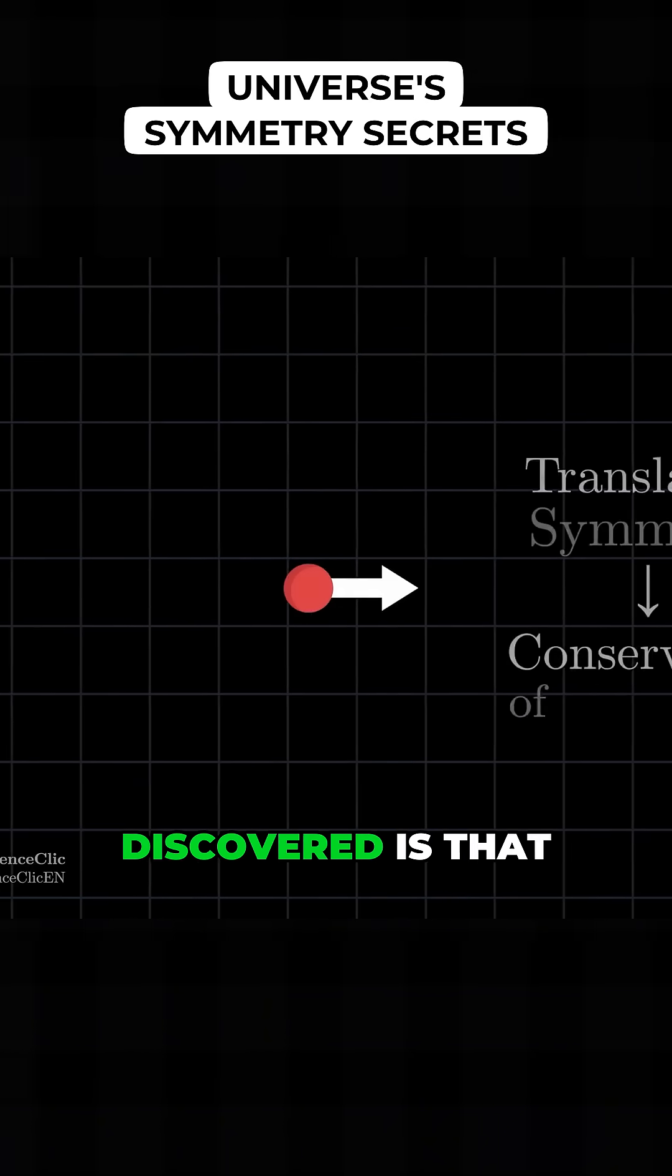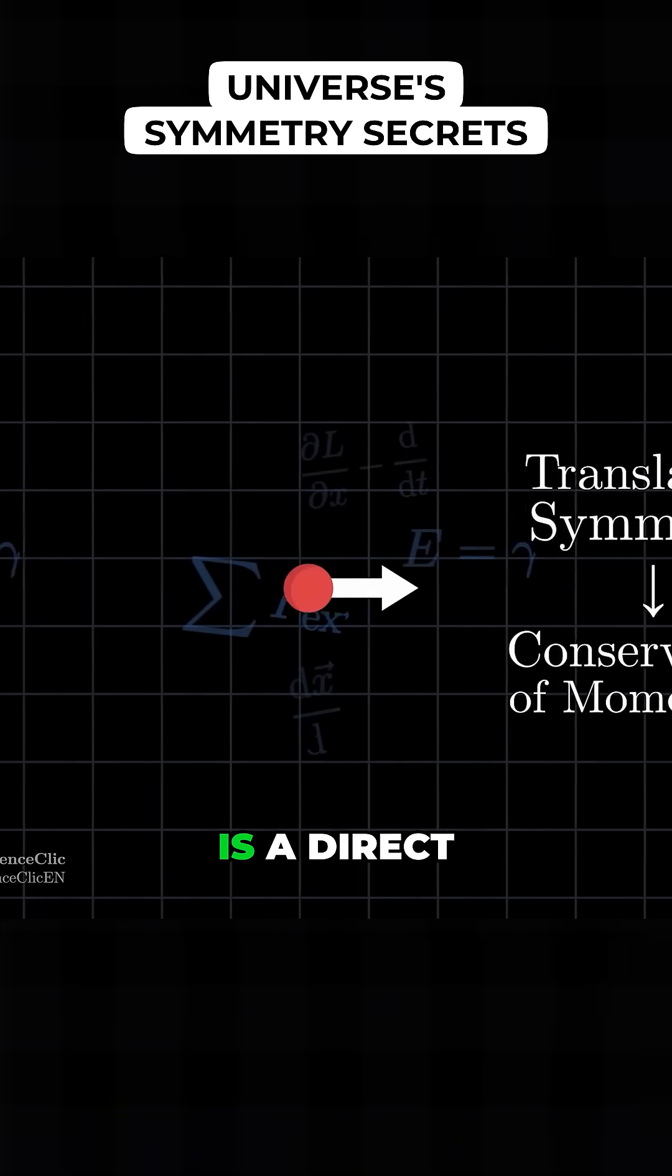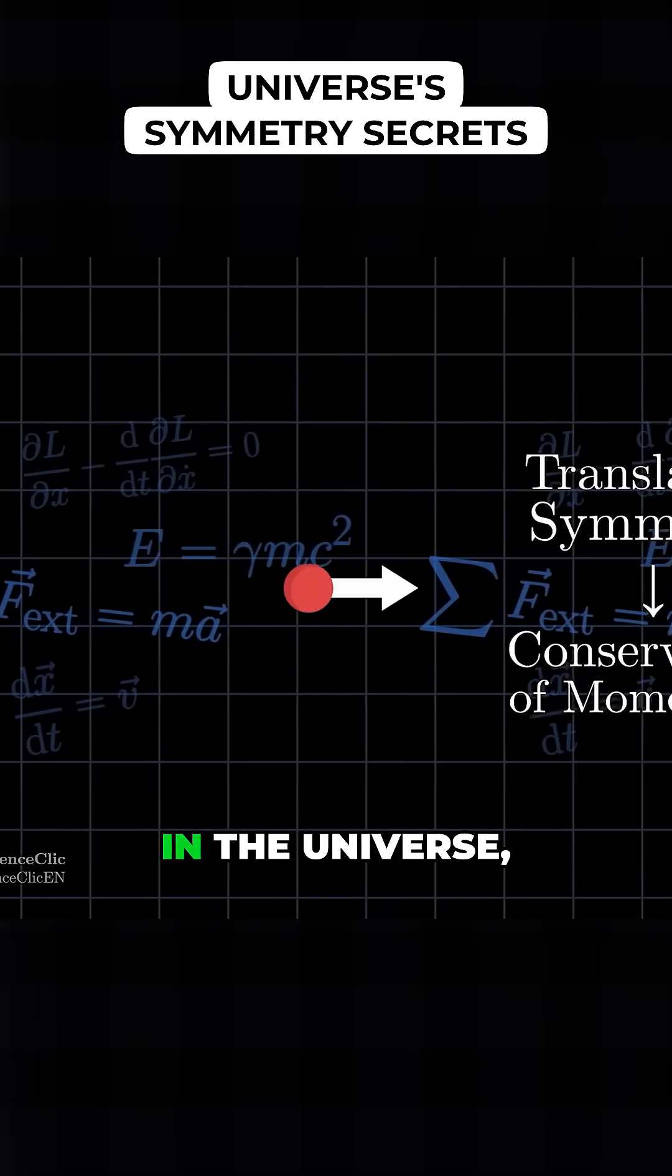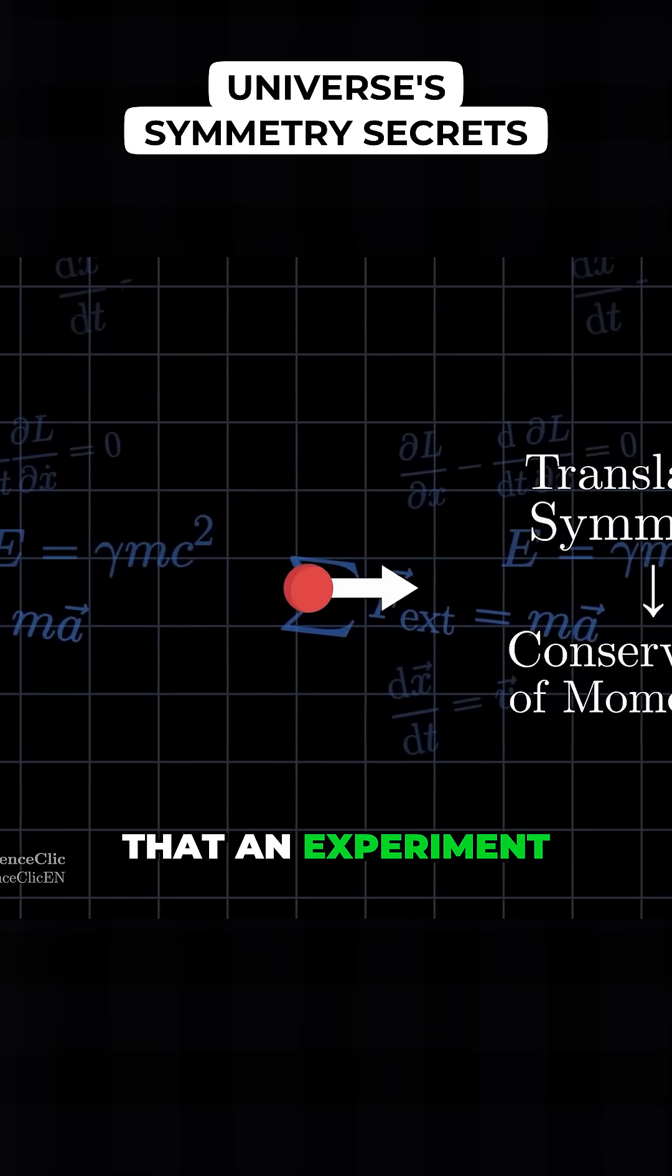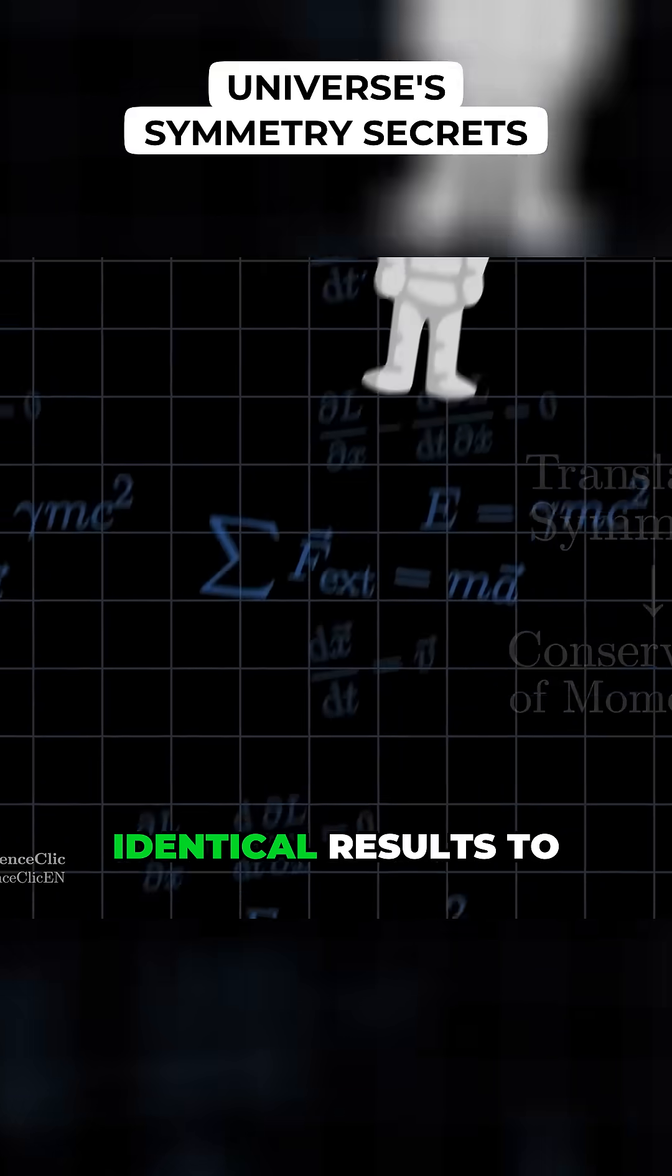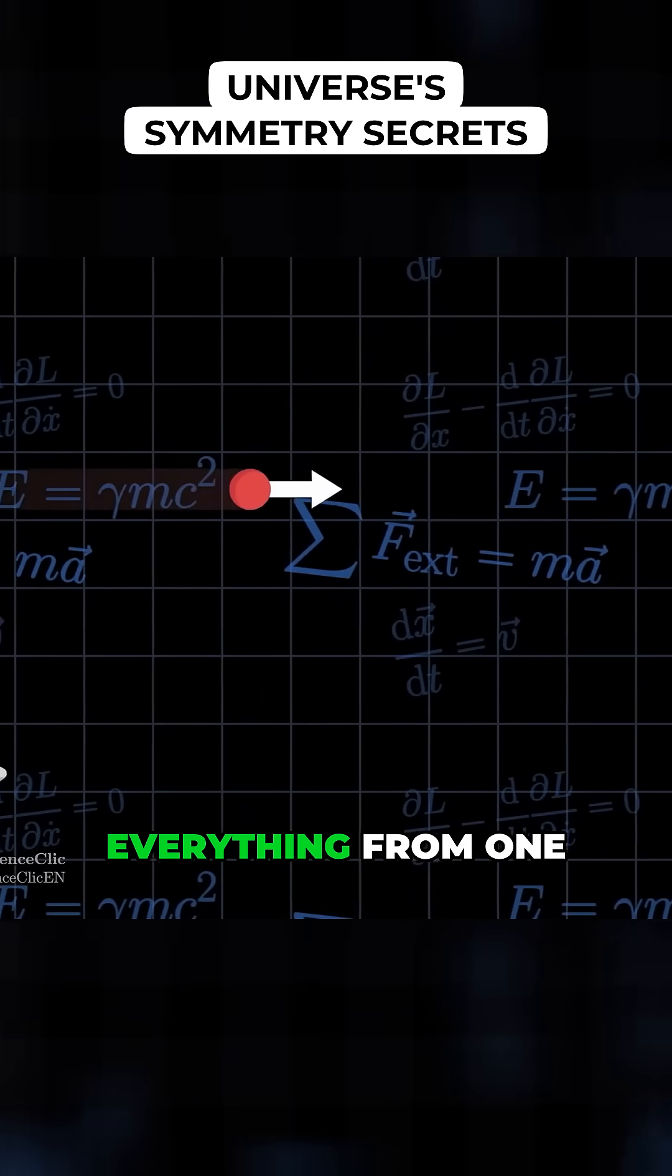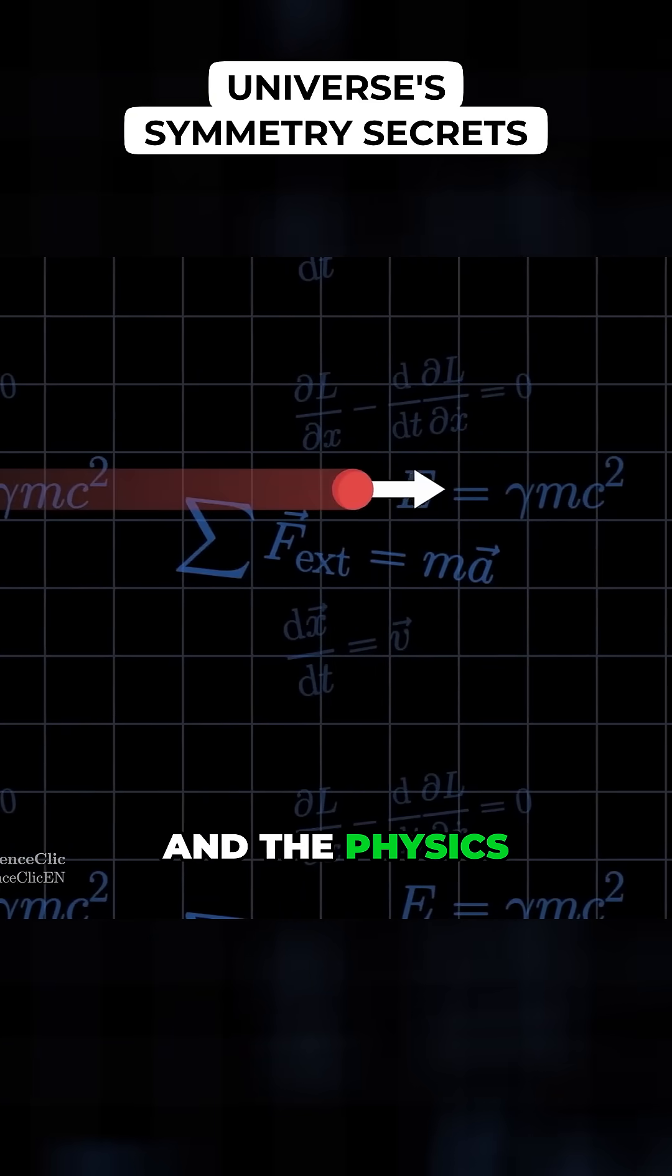So what we've discovered is that the principle of conservation of momentum is a direct result of the fact that there's a translation symmetry in the universe, that an experiment done in one spot will give identical results to that same experiment done somewhere else. You could move everything from one place to another, and the physics won't change.